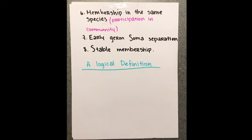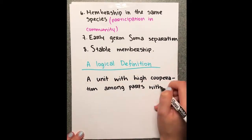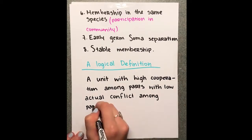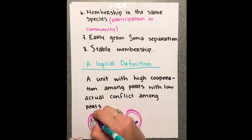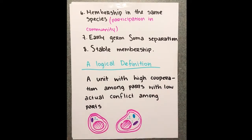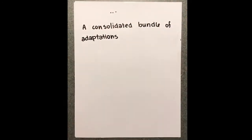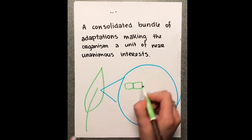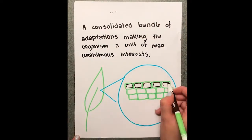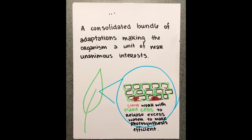In fact, we can say that a logical definition of the organism is a unit with high cooperation among parts and low actual conflict among parts — a consolidated bundle of adaptations, making the organism a unit of near-unanimous interests.